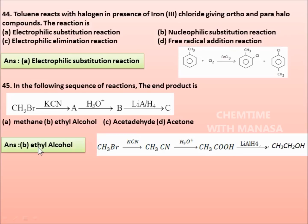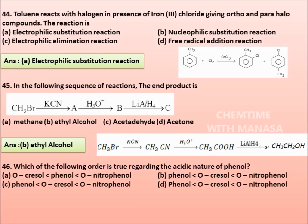46. Which of the following order is true regarding the acidic nature of phenol? Options are: ortho-cresol < phenol < ortho-nitrophenol, phenol < ortho-cresol < ortho-nitrophenol. The correct answer is option A, ortho-cresol is less acidic than phenol, which is less acidic than ortho-nitrophenol.